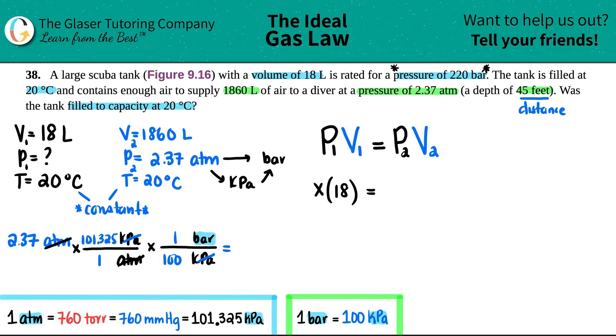So let's see: 2.37 times 101.325 divided by 100. So I get roughly 2 point—I'm going to extend it out a couple of decimals because this is not the final answer, so I'm just going to say 2.401 bar. And that's going to go here. This is now 2.401 bar, so that's my new pressure. And then times by the volume of 1860. I want to solve for x, so I'll just divide by the 18, and I got to do it on this side as well.